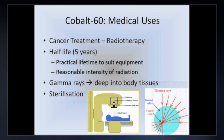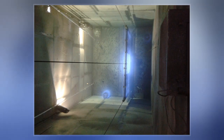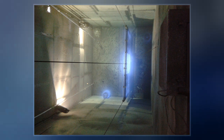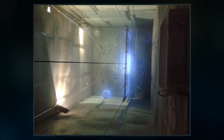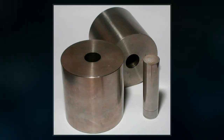The simplest case of the latter would result from the activation of Fe-58. Co-60 undergoes beta decay to the stable isotope nickel-60. The activated nickel nucleus emits two gamma rays with energies of 1.17 and 1.33 MeV, hence the overall equation of the nuclear reaction is: